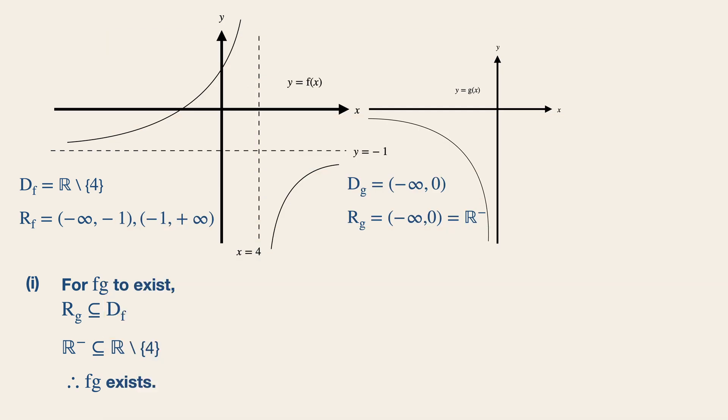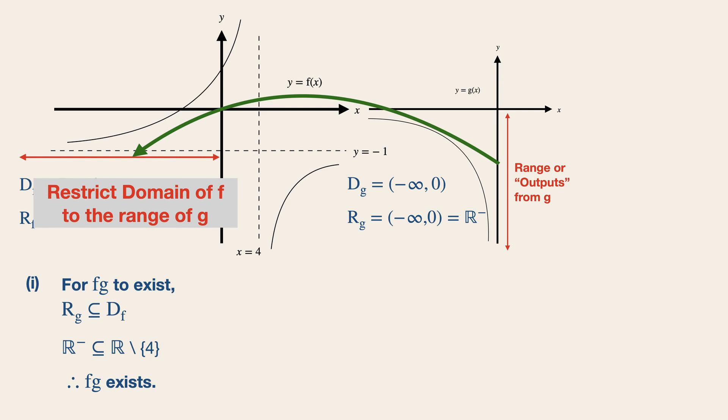Now the range of fg is actually the range of f, but under a certain condition. The condition relates back to part one, where we need to restrict the domain of f to the range of g. In layman terms, the range of g is now the new domain of f.